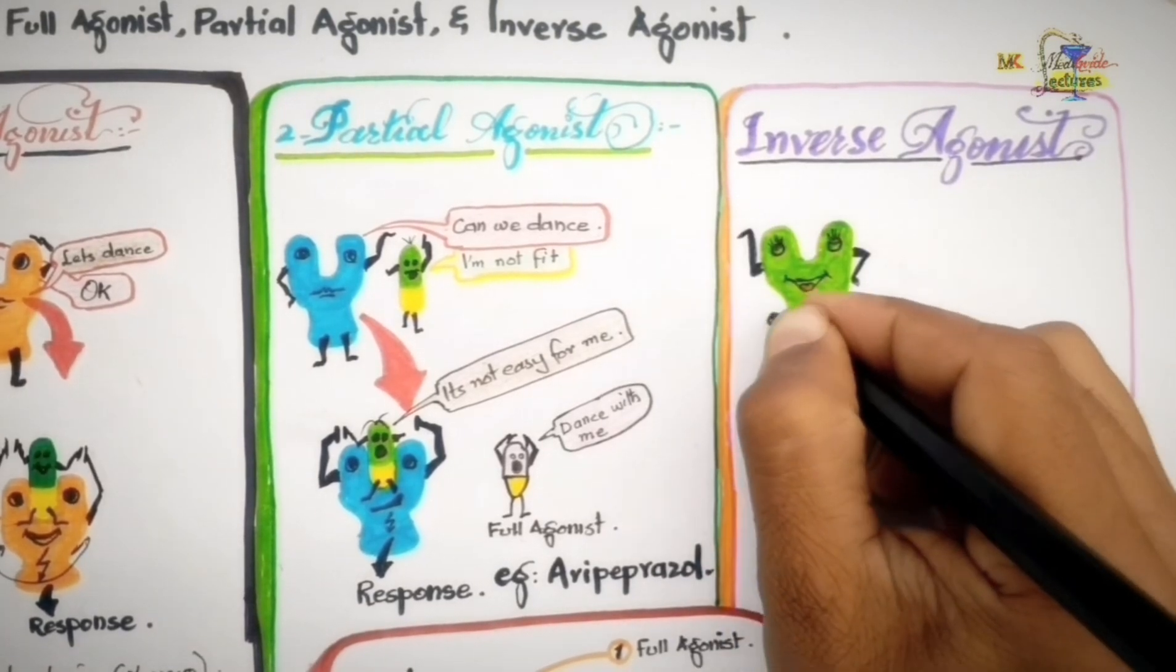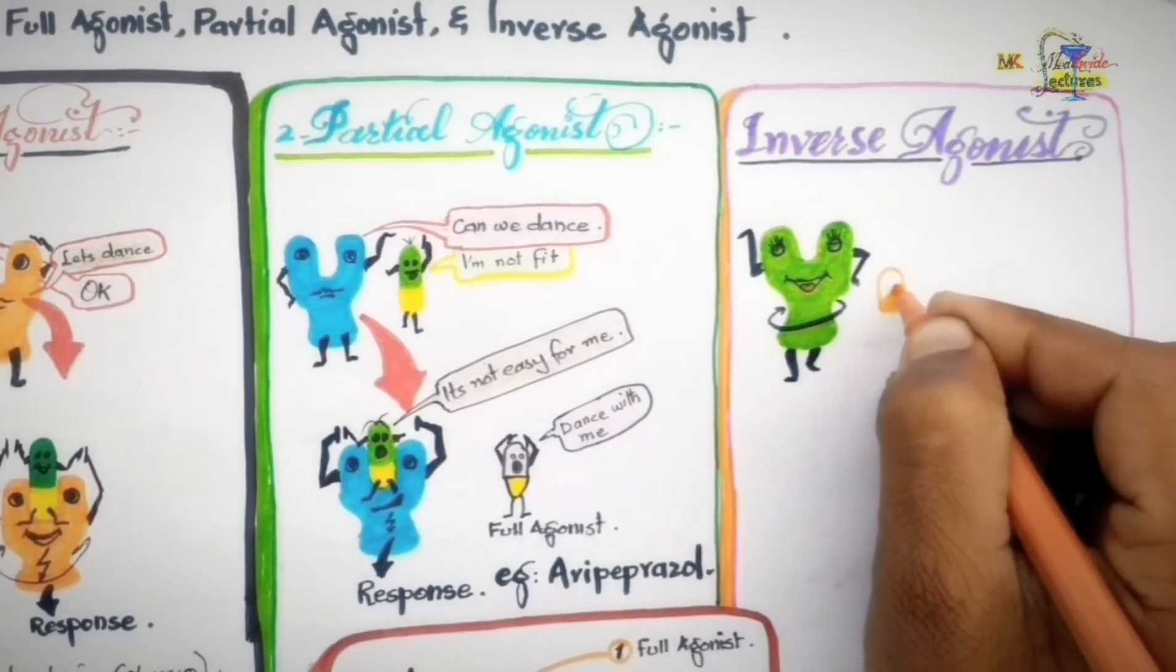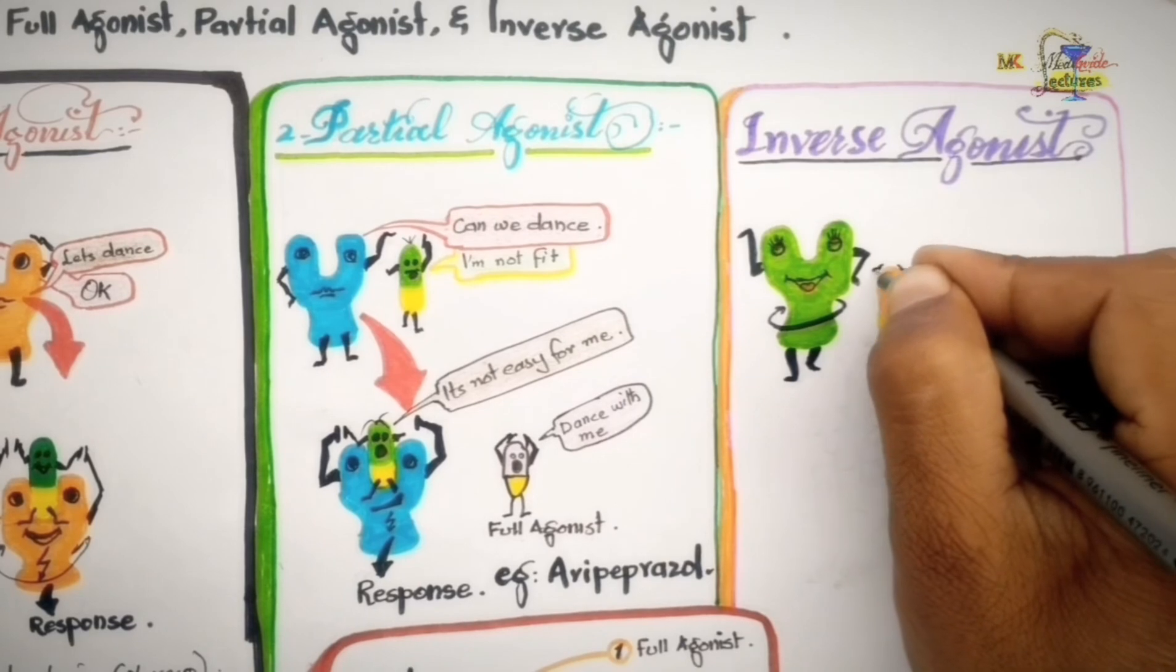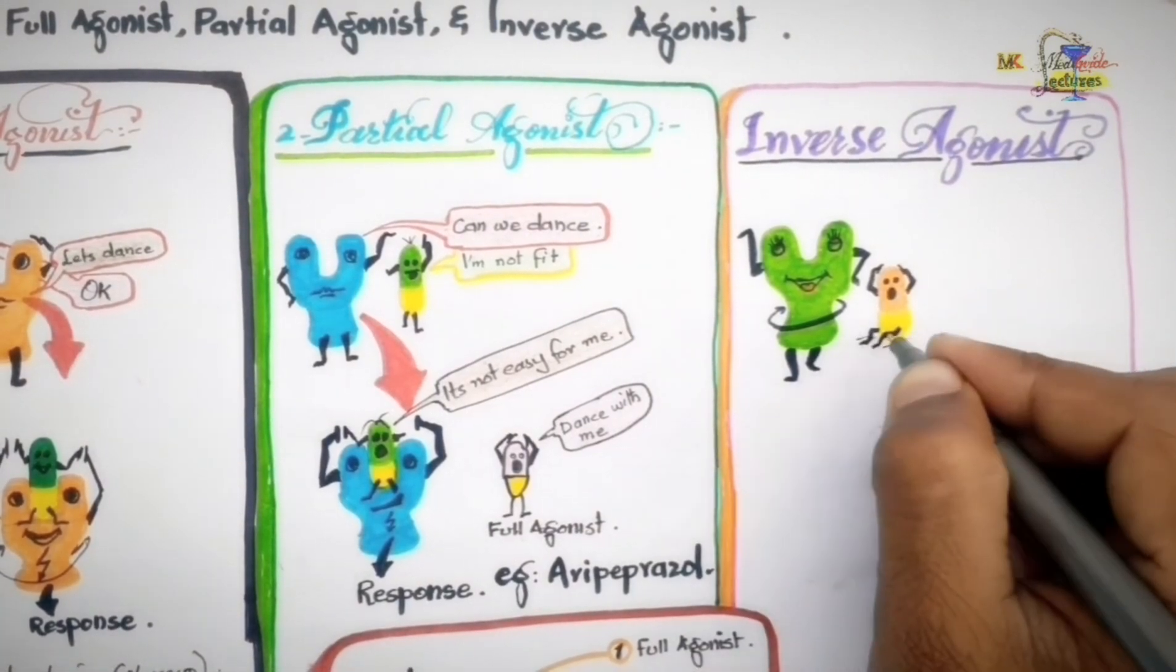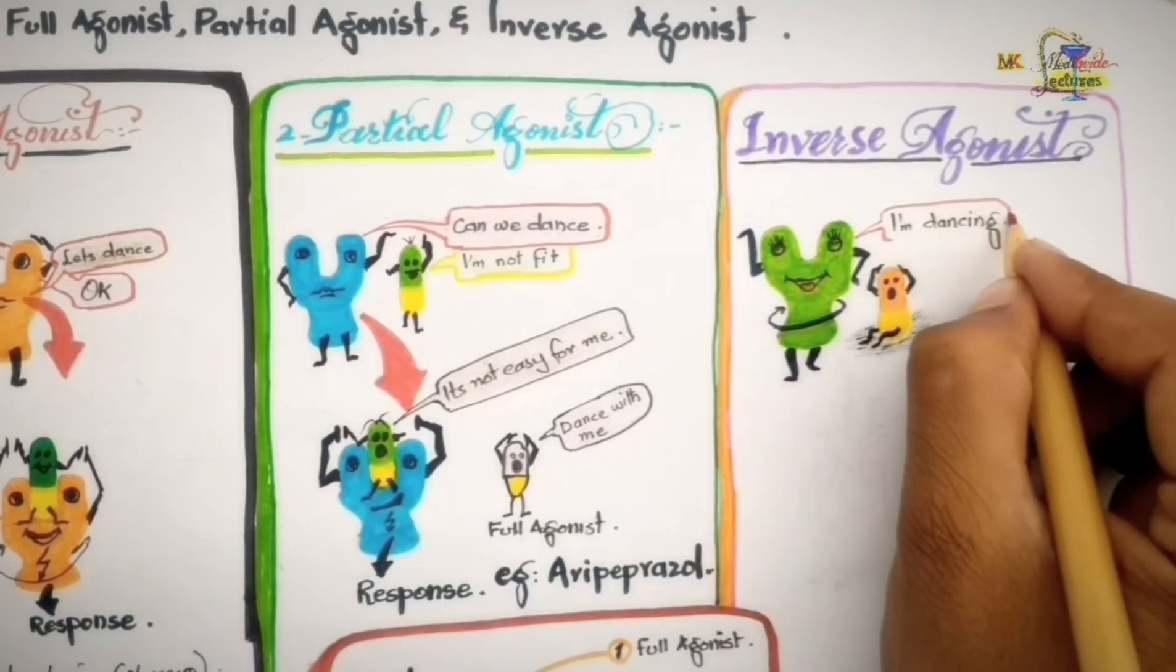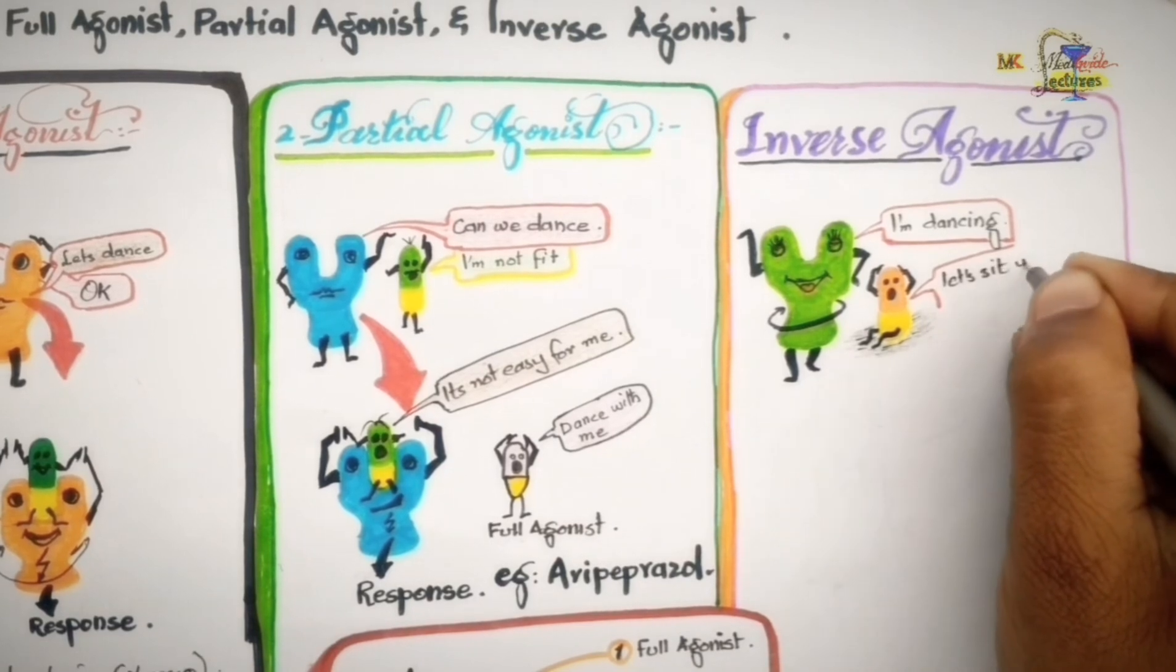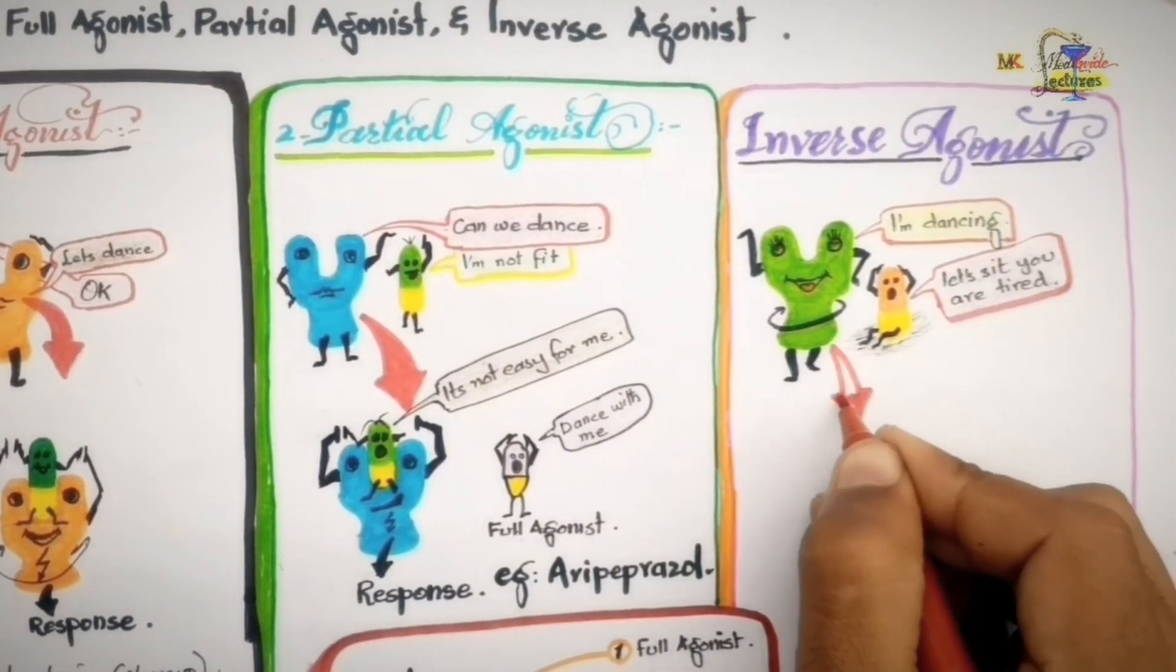Now, the inverse agonists are those drugs which stabilize the receptor in an inactive form and block its constitutive activity. In this diagram, the receptor is activated which is shown as the receptor is dancing without any partner. And the drug is sitting on the side and says to the receptor, let's sit, you're tired.